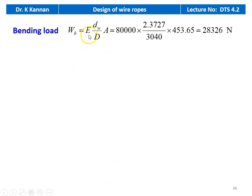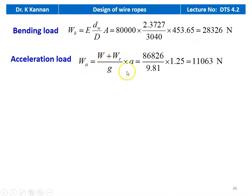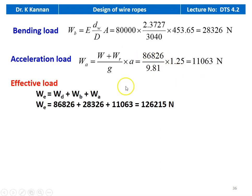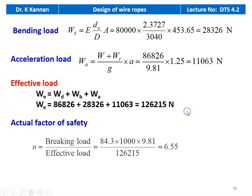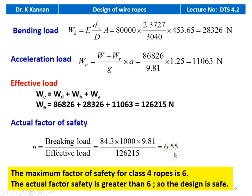Bending load W_B equal to E into D_w divided by capital D into A: 80,000 into 2.3727 divided by 3040 into 453.65 equal to 28,036 newton. Acceleration load W_A equal to (W plus W_R) divided by G into a: 86,826 divided by 9.81 into 1.25 equal to 11,063 newton. Effective load equals 86,826 plus 28,036 plus 11,063 equal to 1,25,925 newton. Actual factor of safety equals breaking load 84.3 tons into 1000 into 9.81 divided by 1,25,925 equal to 6.55. The maximum factor of safety for class 4 ropes is 6, and the actual factor of safety is greater than 6, so the design is safe.